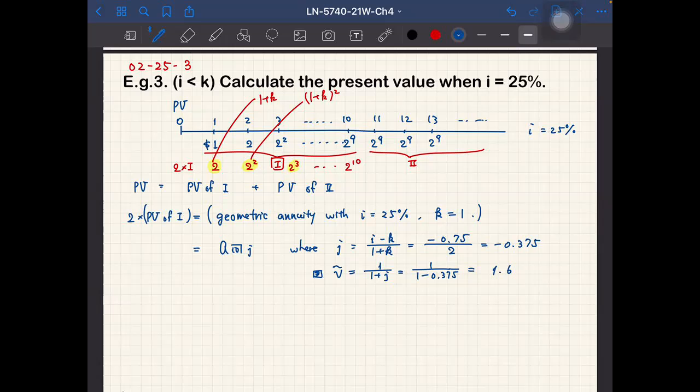Okay, so now we can calculate the PV, I mean the A angle 10 at J. So this is equal to 1 minus 1.6 to the 10th power divided by negative 37.5%, negative 0.375.